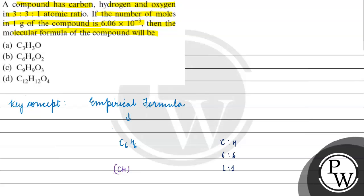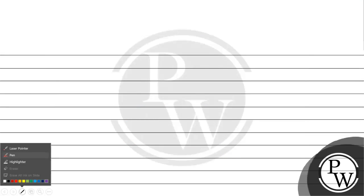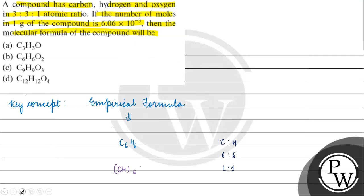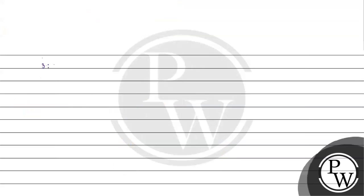Any compound — if we write its formula in the simplest ratio, we call it the empirical formula. If we multiply the empirical formula by a factor N, we get the molecular formula. Now if we talk about this question, we know the atomic ratio — the atomic ratio is 3:3:1 for carbon, hydrogen and oxygen.